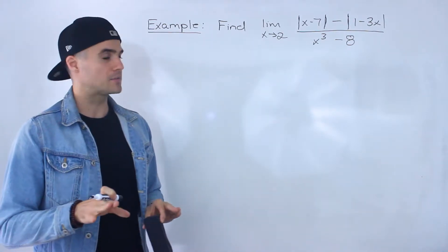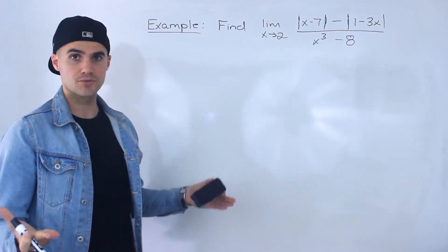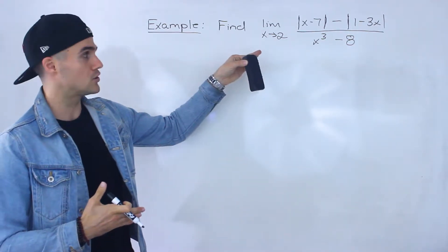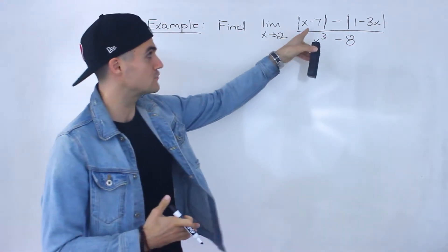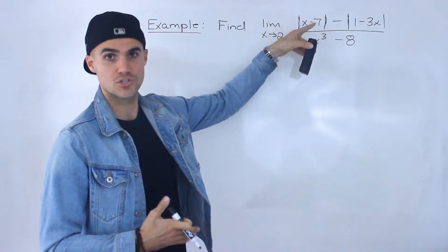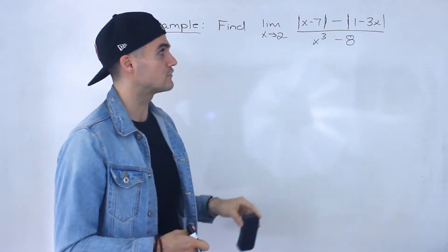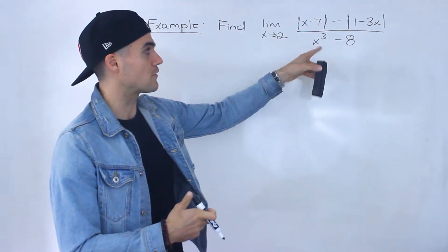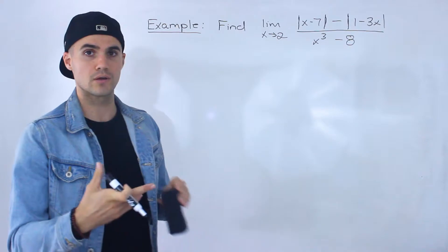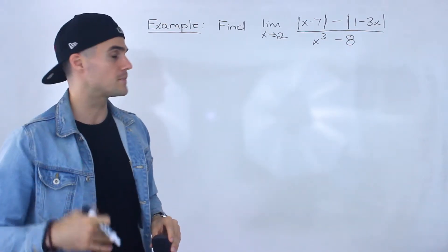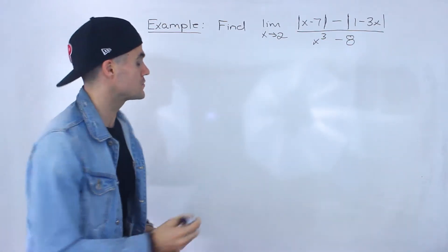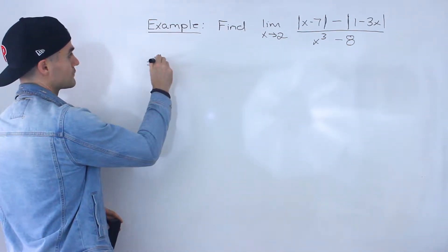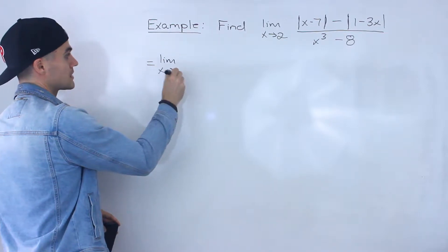So this is a pretty unique limit. Notice first you can't do a direct substitution. If we plug in 2, we would get 0 in the numerator because we'd have the absolute value of negative 5, which is positive 5, minus the absolute value of negative 5, which is also positive 5. So 5 minus 5 is 0, and 2 to the power 3 minus 8 is also 0 — indeterminate form 0 over 0. So we can't do a direct substitution, and we'll need another strategy.